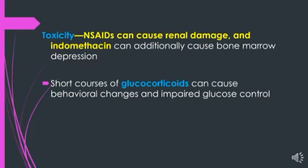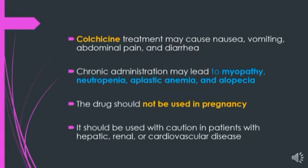In chronic gout, the strategies to decrease uric acid in the serum are to decrease synthesis or to increase excretion and metabolism. The drug decreasing synthesis is allopurinol.